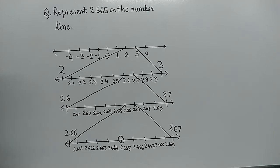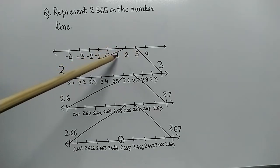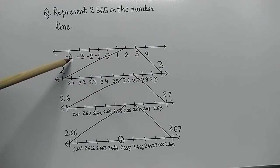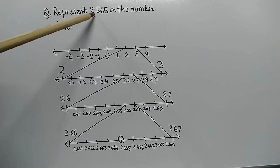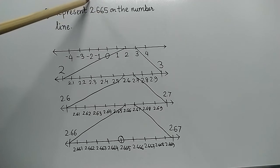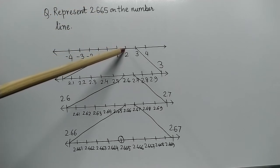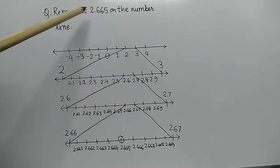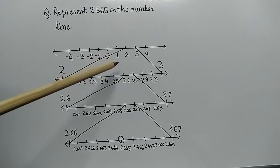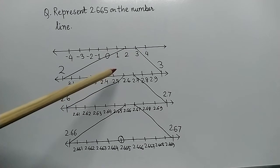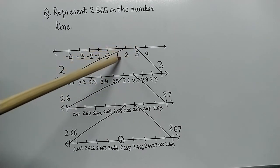Let us begin. As you can see, this is the number line — we have zero, the positive numbers, as well as the negative numbers — but our main focus will be 2.665. Now, this number 2.665 lies between 2 and 3. So we need to magnify this portion between 2 and 3.